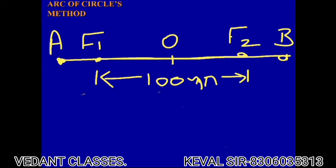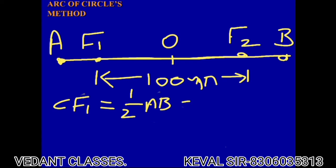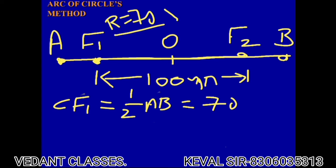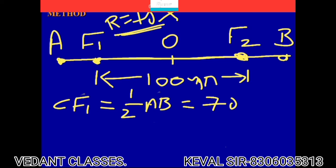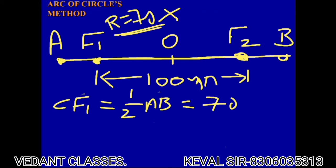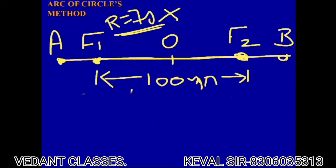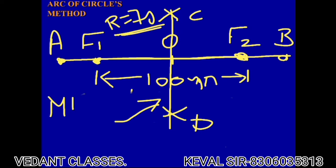Consider CD as the minor axis. Since the length of the minor axis is not given in the question, we know that C to F1 equals half of AB, which is equal to 70 mm. Just put the compass at F1 and mark a point with radius 70 mm, then apply the same from F2. At the bottom part, repeat the same process; when you join these intersections you will get points C and D, so CD will be your minor axis.